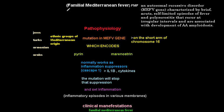In this video I'm going to talk about Familial Mediterranean Fever (FMF). FMF is an autosomal recessive disorder that has a defect in the MEFV gene — the Mediterranean Fever gene. This disease is characterized by brief, acute, self-limited episodes of fever and polyserositis, which I'll mention in detail. These attacks recur at irregular intervals and are associated with the development of amyloidosis.